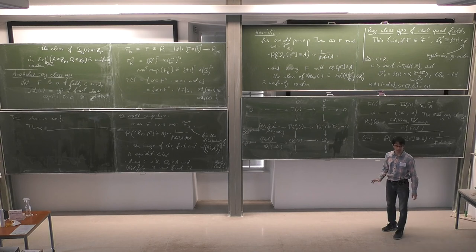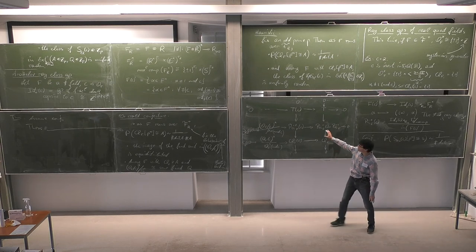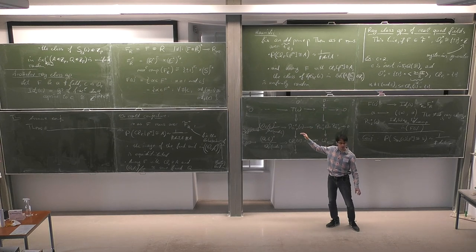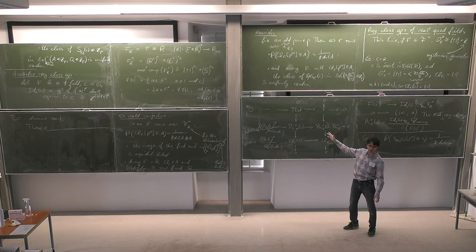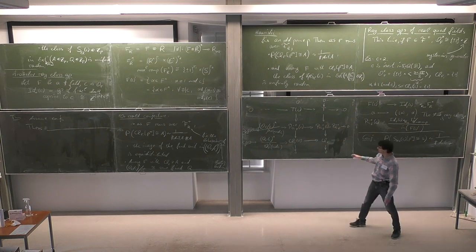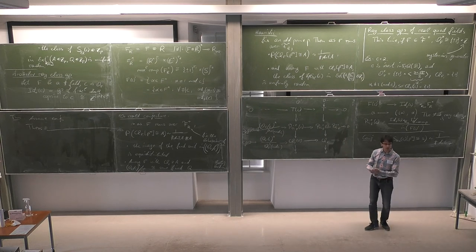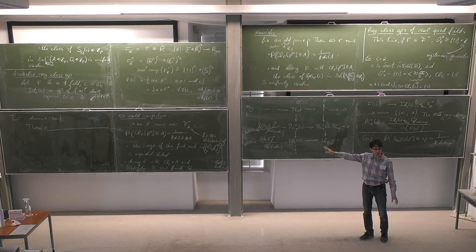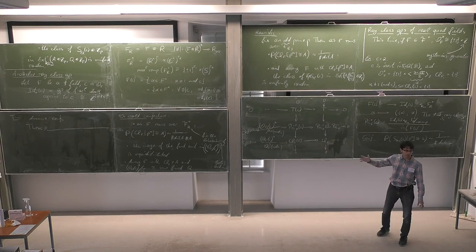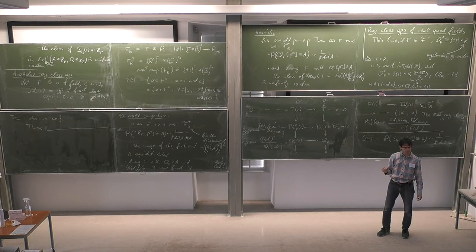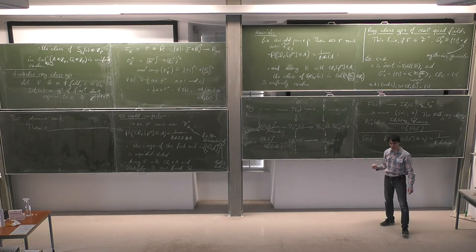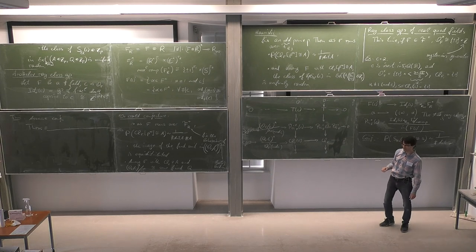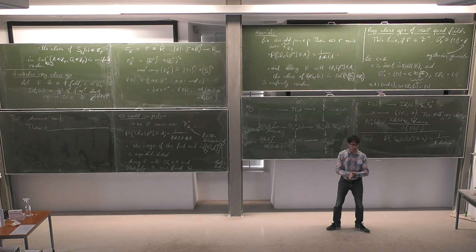Maybe this is a good opportunity to say: if you're only interested in the sequence at your favorite prime P — so the P-primary torsion — you could instead have worked with Selmer groups in the right setting. But it turns out this conjecture will in fact hold, suitably modified, for completely arbitrary families of number fields, and there working locally prime by prime isn't good enough anymore. That's why we like the Arakelov ray class group rather than just Selmer groups.